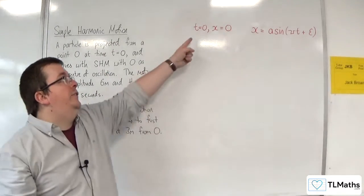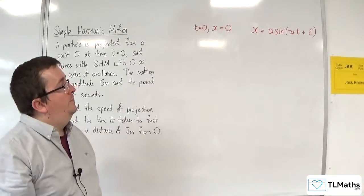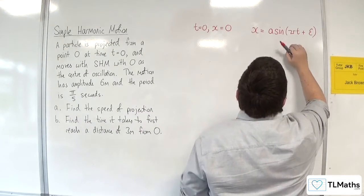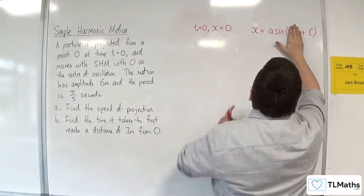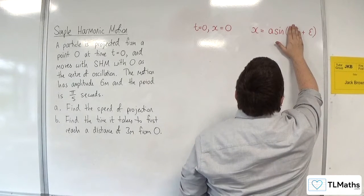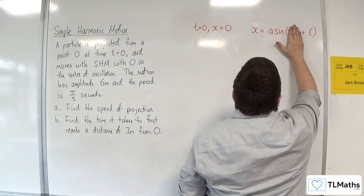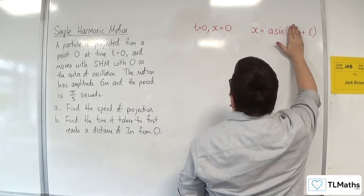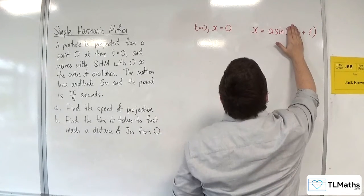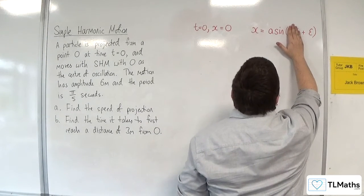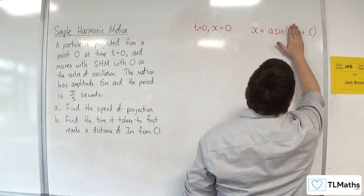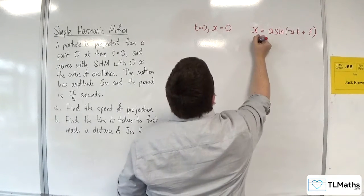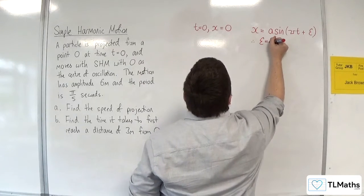Now if we have that t equals 0 when x equals 0, then if t is equal to 0, and we need x to be equal to 0, well either the A is 0, which it's not going to be because that would mean the amplitude is 0, and we know the amplitude is 6. So that means that epsilon has to be 0, therefore epsilon is 0.